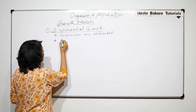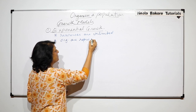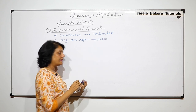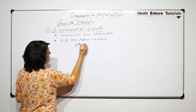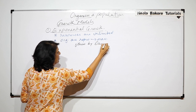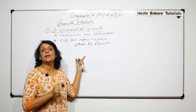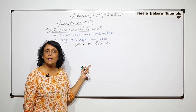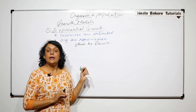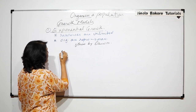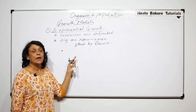In this growth model, another factor taken into account is that organisms are reproducing to their maximum capacity. This is what Darwin referred to as fitness — 'survival of the fittest.' The word 'fitness' is used for organisms which are able to utilize their reproductive potential to the maximum.